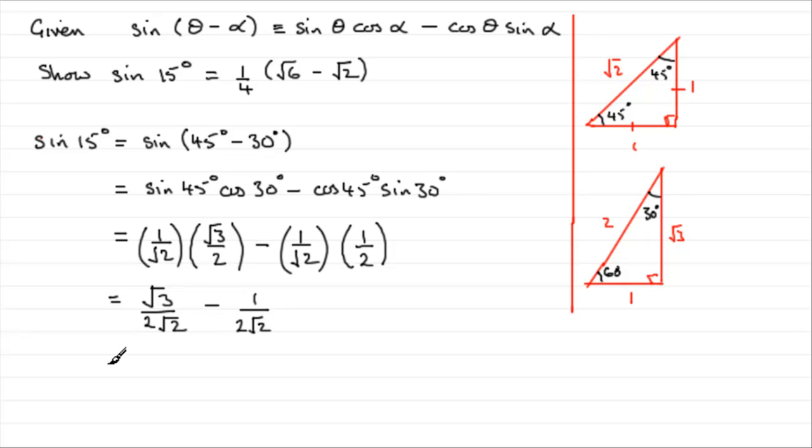So what have we got here? Well we've got the same denominator, so we can say that's all over 2 root 2, and then on the top we're going to have root 3 minus 1. Now looking at what we've got to show here, you can see that we've got the quarter at the front, we've got no square roots in the denominator, so that means we've got to get rid of this root 2.